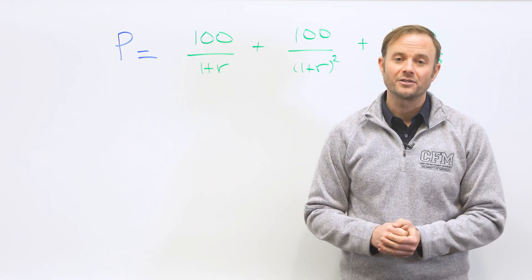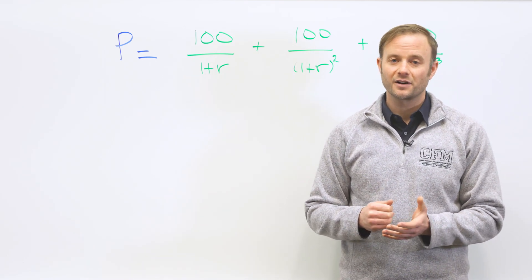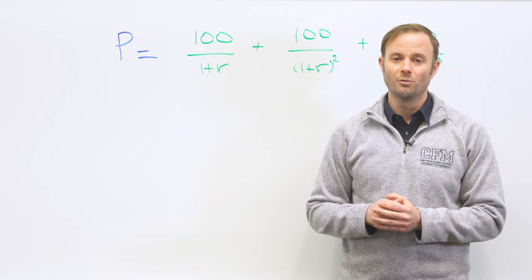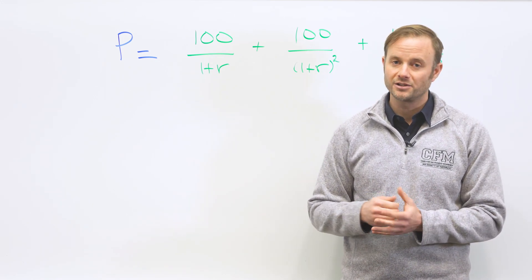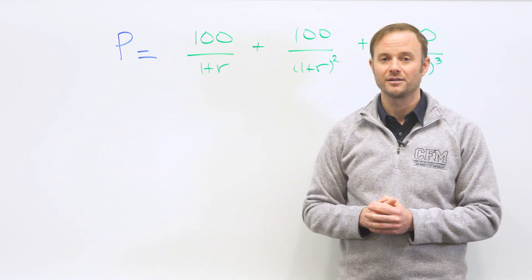Now that we have an understanding of the time value of money and we know what a bond is, we can look at a very simple example. Imagine a bond that will pay you $100 starting in one year's time for three years. What would the price, P, of that bond be?